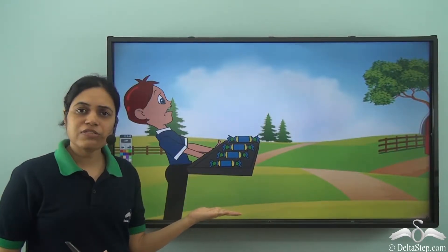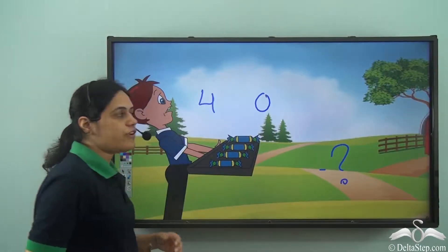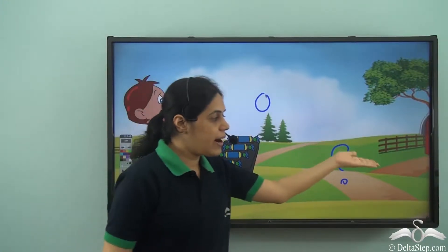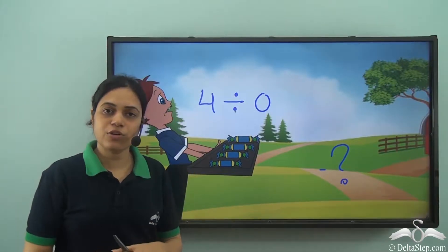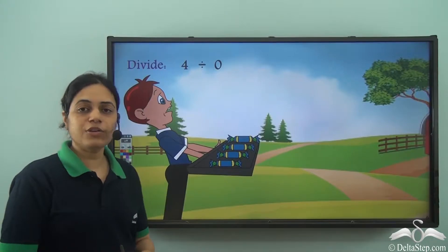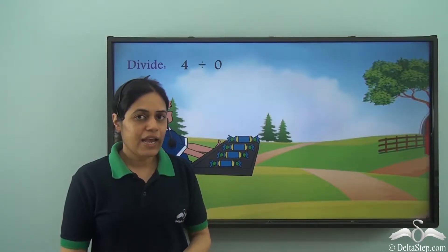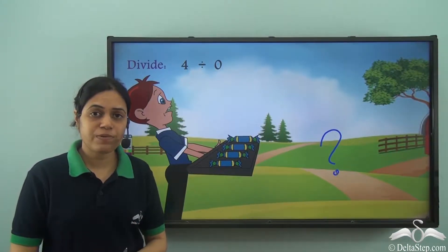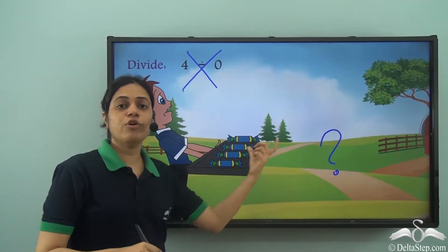Now suppose Rohan has four toffees but no friends — there are zero friends. He has to divide these four toffees among zero friends. So four divided by zero: if I have four toffees but no friends, can I ever divide those toffees? How will I divide them? It is not possible. So it is not possible to divide four by zero.